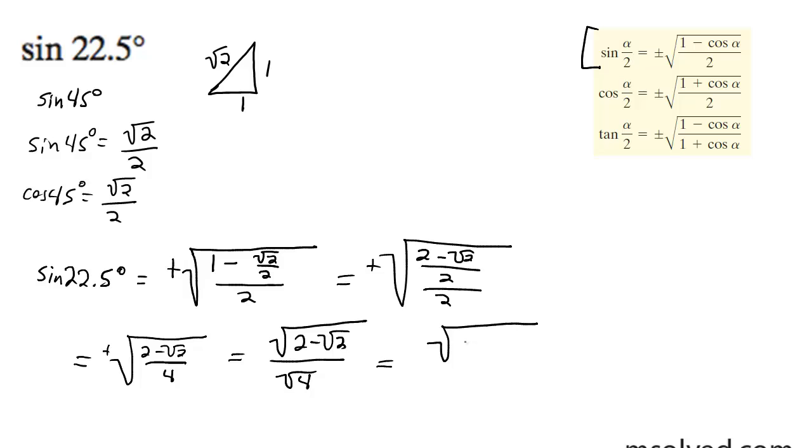It simply becomes square root of 2 minus root 2, all over 2, and that's it.